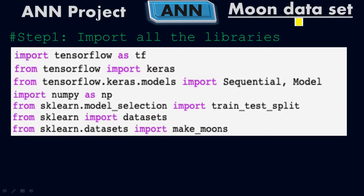From sklearn.datasets we import make_moons. First we import datasets from scikit-learn, and then from within that sub-module we import make_moons specifically. Scikit-learn has many built-in datasets; we are only importing make_moons here. It is a built-in dataset — not something I have developed myself.